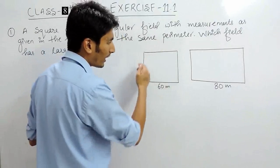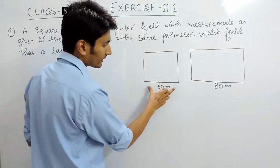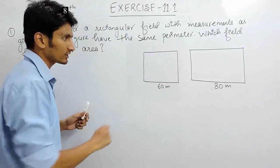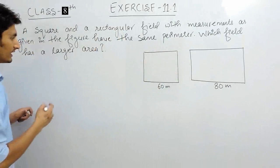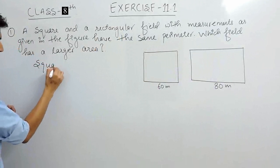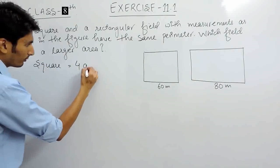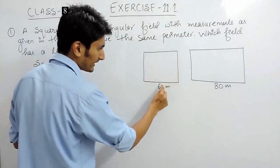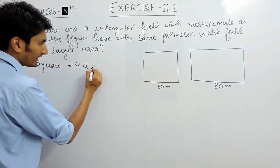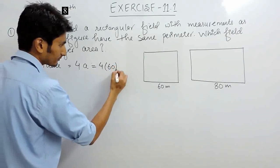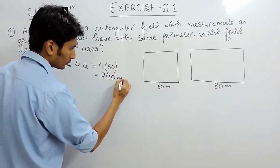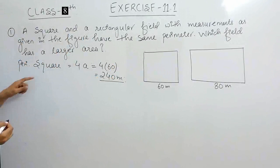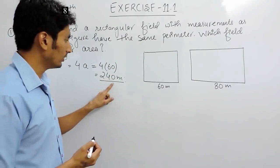We know that in a square all the sides are equal. So if this side is 60, then all sides are 60 meters. The perimeter of this square field is equal to 4a, where a is the side — that is a plus a plus a plus a. Here a is equal to 60 meters, so the perimeter is 240 meters.